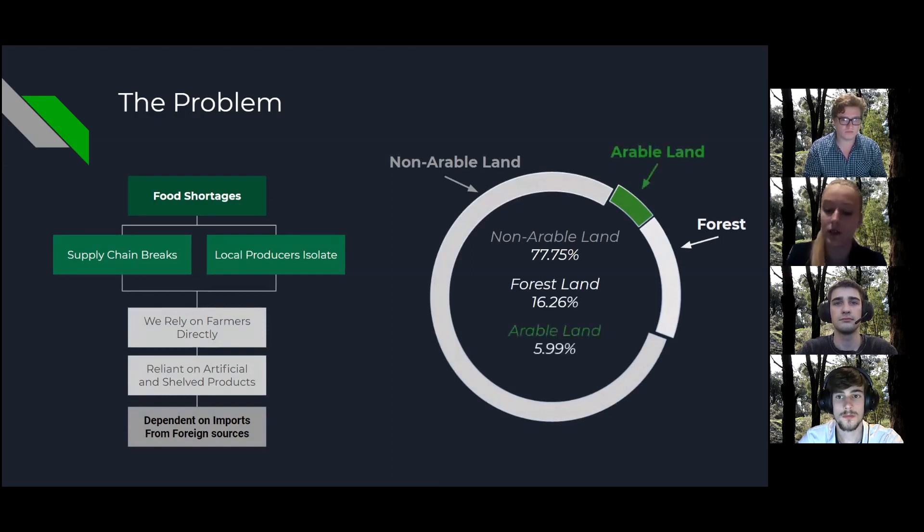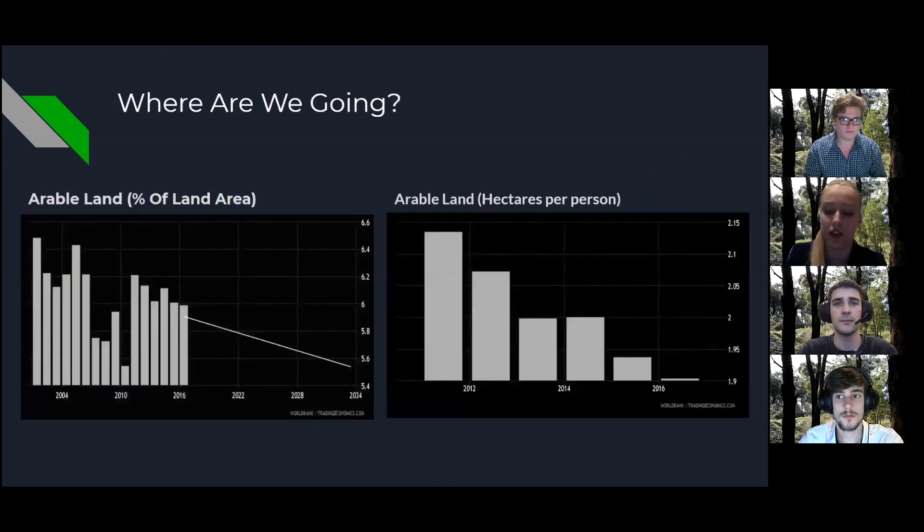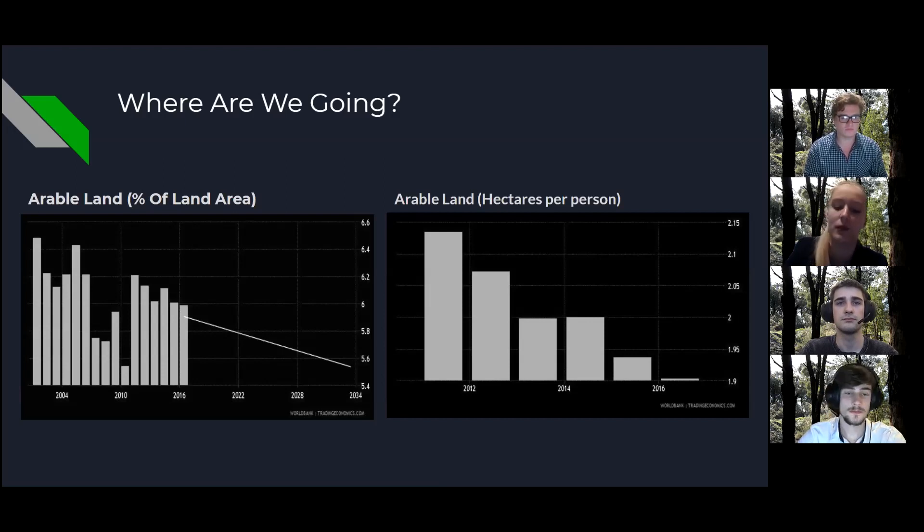With the rapid growth of Australia's population and diminishing amount of farming land available, the requirement for a more compact and efficient farming solution is required now more than ever. As you can see in this trend, the issue isn't getting any better and isn't predicted to any time soon. I'd now like to pass on to Max, who will talk about why there is a need for our product and explain more about this issue.